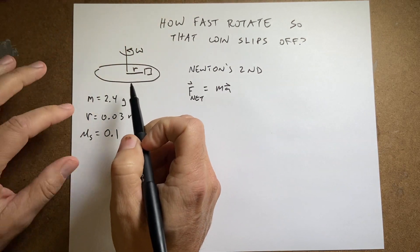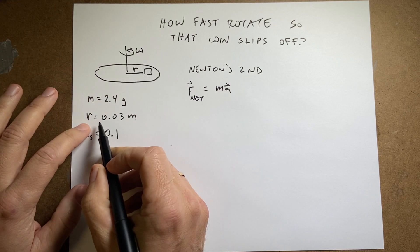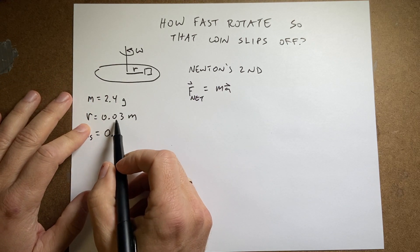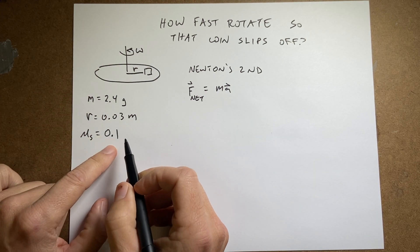Okay so here are the parameters that I picked. The mass of the object I put is 2.4 grams. The radius of the circle that is moving in is 0.03 meters or 3 centimeters. I just picked these and the coefficient of static friction is 0.1.